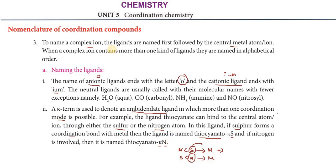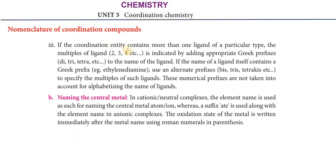The third rule: if the coordination entity contains more than one ligand of a particular type, numerical prefixes are used. For anionic ligands ending in 'O', cationic ending in 'IUM', and neutral ligands — with exceptions such as aqua, carbonyl, ammine, and nitrosyl — numerical prefixes indicate how many of each ligand type are present.